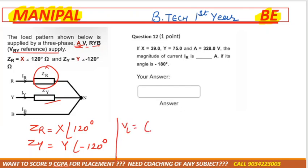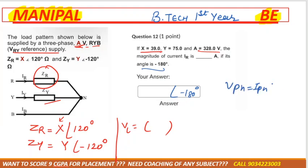In star connection, current is the same but voltage is different. Given ZR, ZY, and the voltage, we need to calculate the magnitude of IR. Using VPH = IPH × ZPH for star connection, and since angle is −180°, we know VPH = VL / root 3.